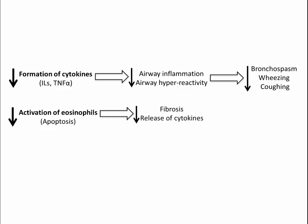The inhibition of eosinophil activation by increasing apoptosis reduces collagen deposition, or what is called fibrosis, to the basement membrane of the airway epithelium, and it stops the release of cytokines.